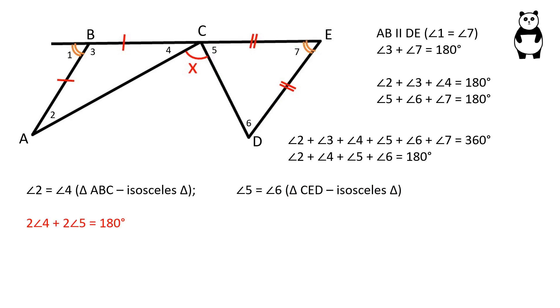We can write our equation as 2 times angle 4 plus 2 times angle 5 is equal to 180, and after simplifying the equation, we get that angle 4 plus angle 5 is equal to 90 degrees.